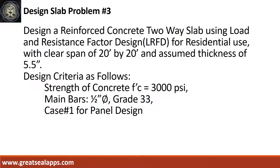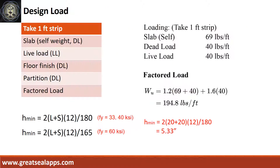Design a reinforced concrete two-way slab using load and resistance factor design for residential use with clear span of 20 feet by 20 feet and assumed thickness of 5.5 inches. Design criteria: strength of concrete 3,000 PSI, main bars half-inch diameter grade 33, case number 1 for panel design. The uniform load for 5.5-inch thick slab is 69 PSF, residential live load is 40 PSF, other dead load (floor finish and partition) is 40 PSF, for a total factored load of 194.8 PSF.